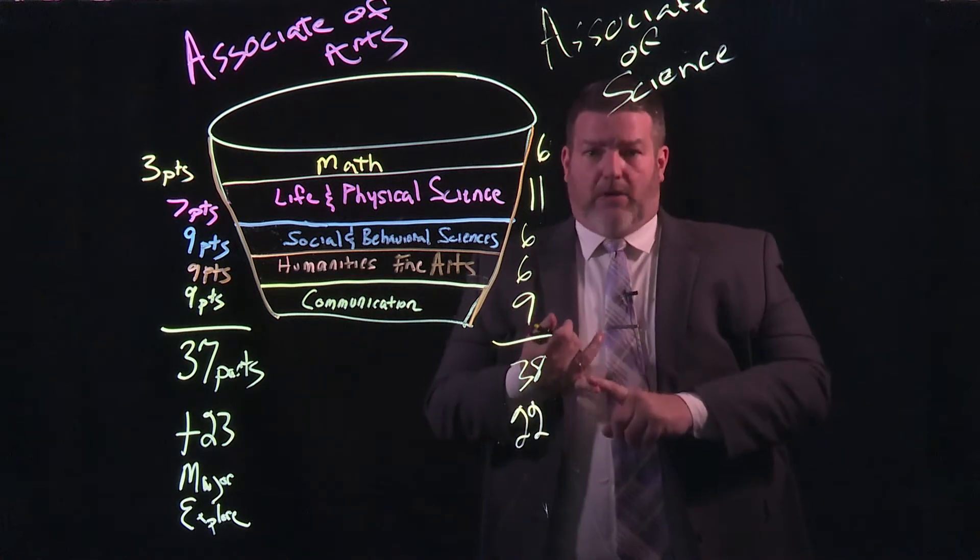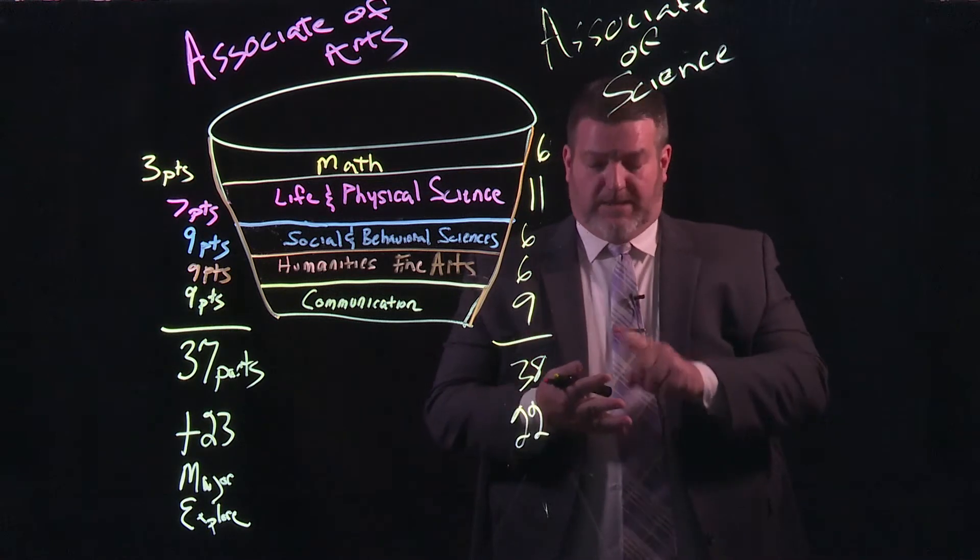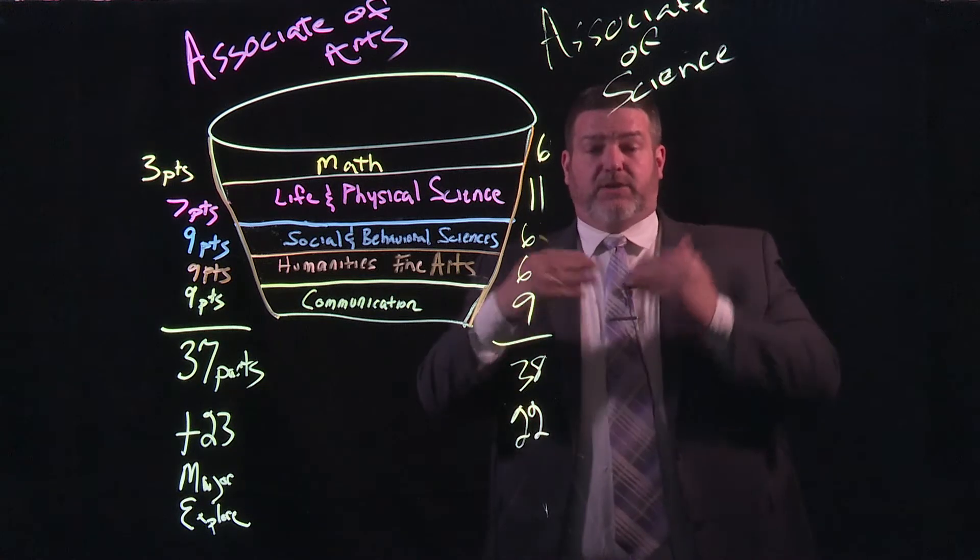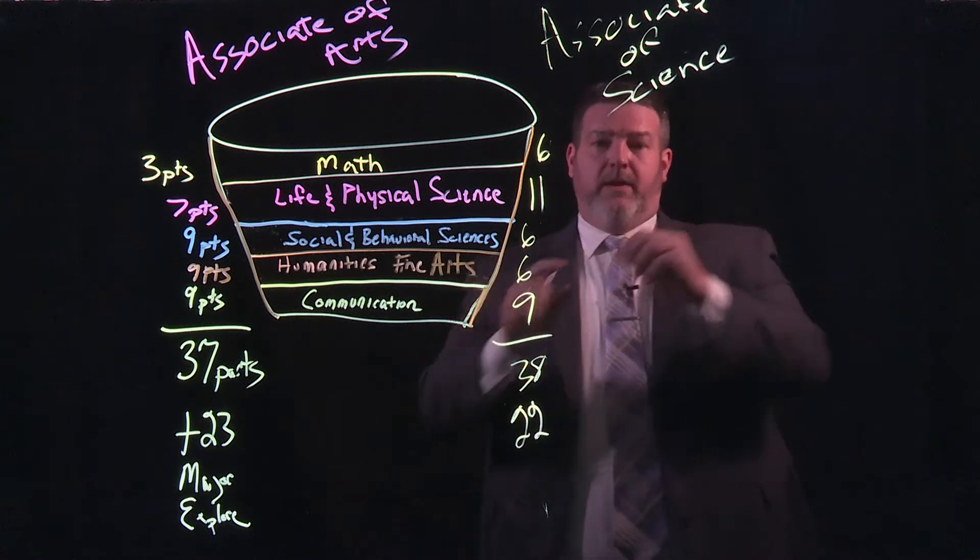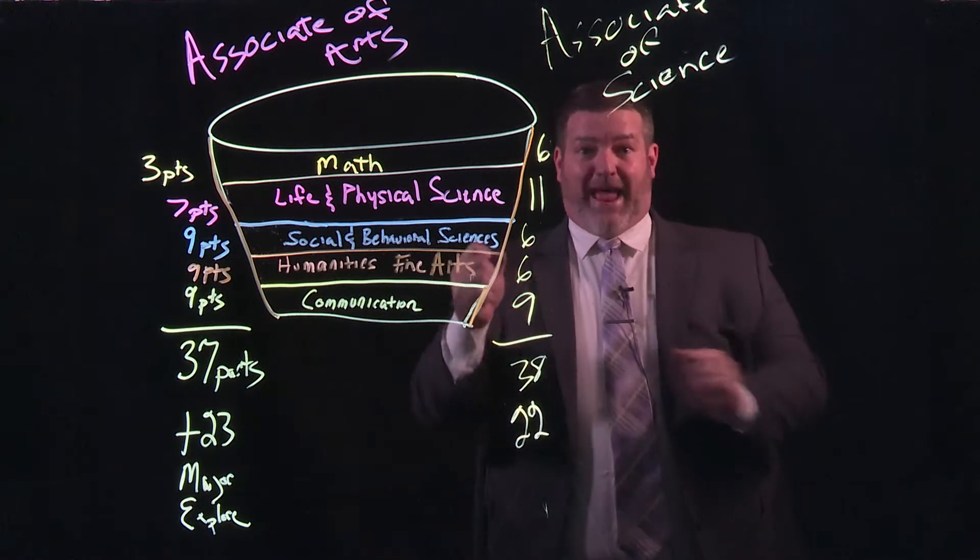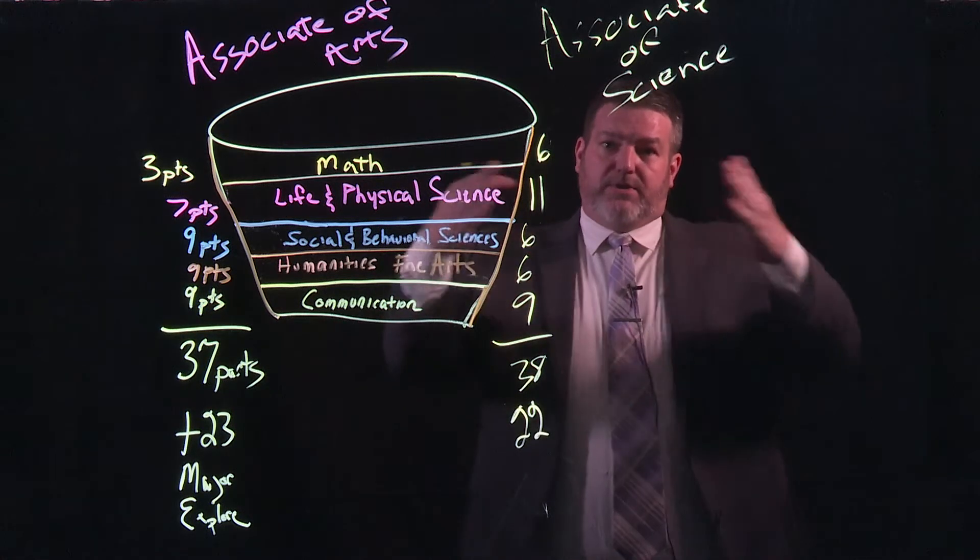You need to get Calc 1, Calc 2, Trigonometry. You need a series of physics courses, a series of chemistry courses that are sequential. So you must take Course 1 before you can get to Course 2. So it takes time. And so in some of those fields, they flip that. So you get that base understanding, your freshman and sophomore year, and then you can do the theory.